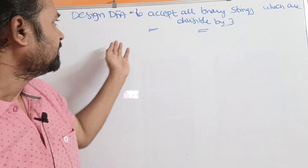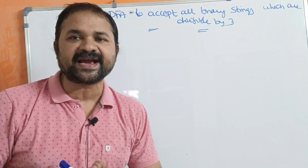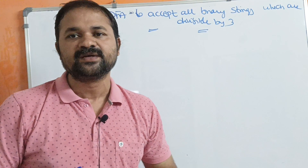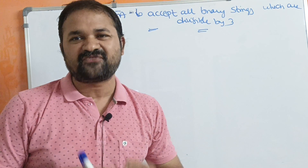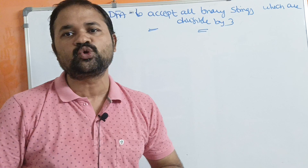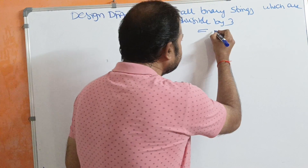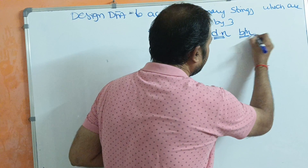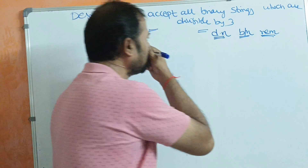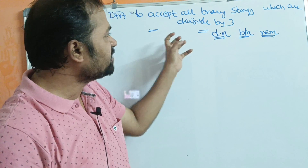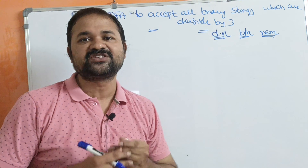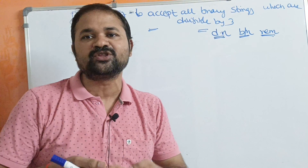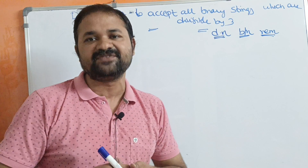Let's see this example: design a DFA to accept all binary strings which are divisible by 3. We know a binary number is a combination of 0 and 1. First, let us represent numbers from 0 to 10 in binary notation. We have three columns: decimal number, binary number, and remainder. We need to calculate the remainder because our DFA should accept binary numbers divisible by 3 — divisible by 3 is nothing but the modulo operation. If that modulo 3 equals 0, then the number is divisible by 3.